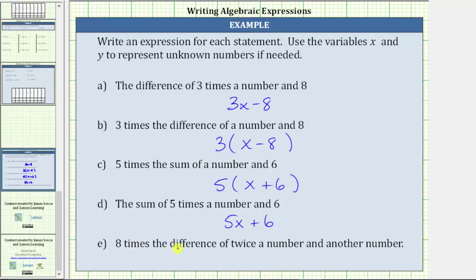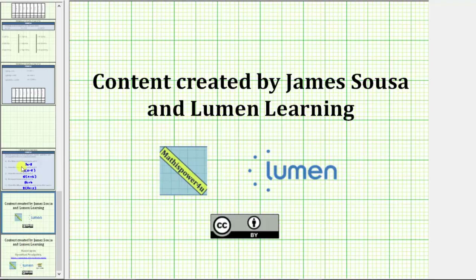For e, we have eight times the difference of twice a number and another number. Because we have eight times the difference, we will have eight, then in parentheses the difference. The difference of twice a number and another number is two x minus y, where x is this number and y is another number. I hope you found this helpful.